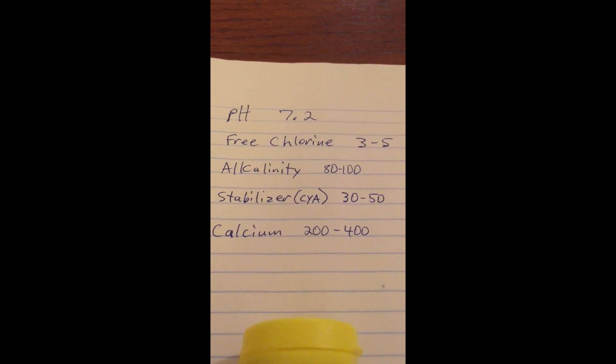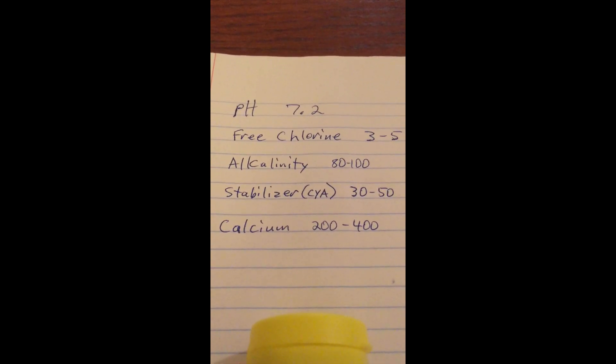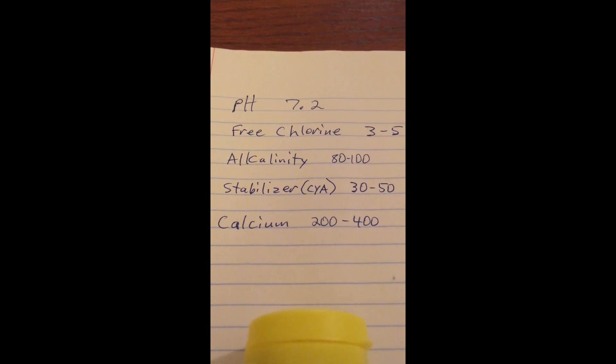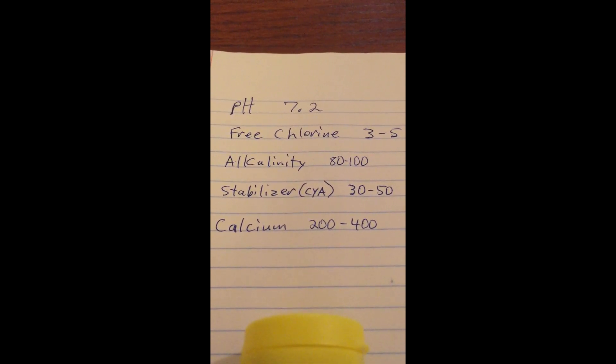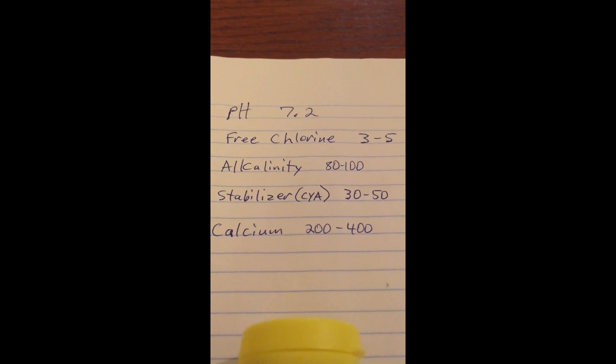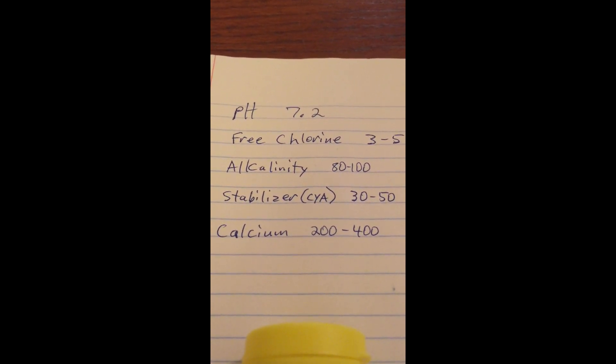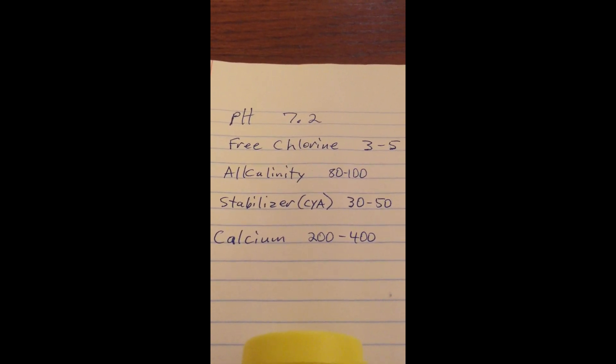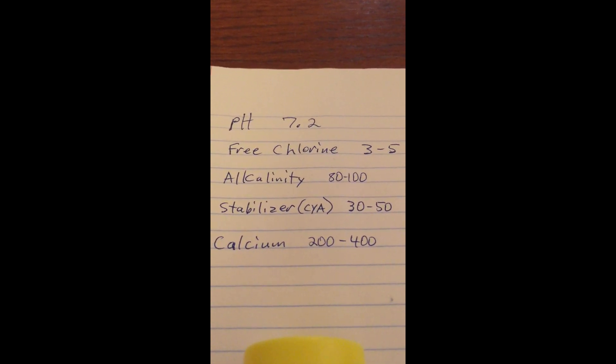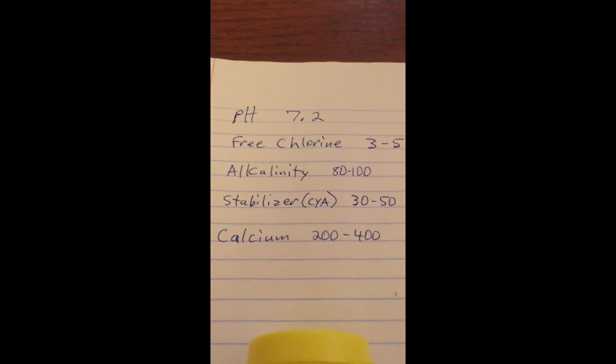Just be aware that your cyanuric acid levels, if you use a dichlor type shock, a chlorine shock, it has stabilizer in it. And so it will continue to increase your stabilizer level, especially if you're shocking the pool a lot with a dichlor mixture as opposed to a calcium hypochlorite shock. So don't worry about it.